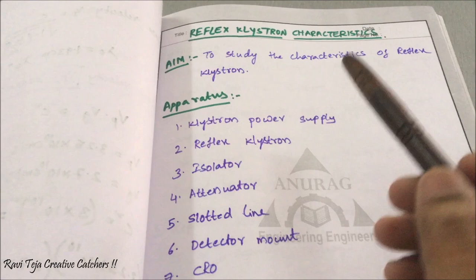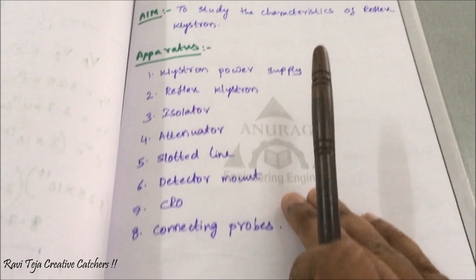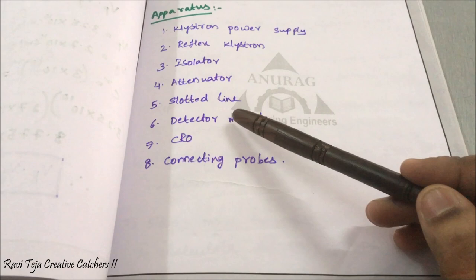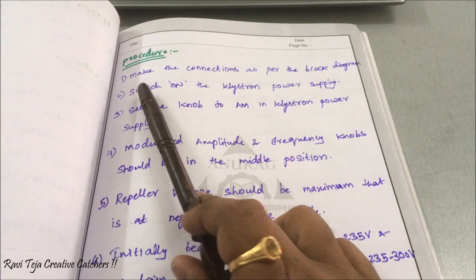Hello everyone, welcome to the course of microwave engineering. In today's lab we are going to learn about reflex klystron characteristics. The aim is to study the characteristics of a reflex klystron. The apparatus we need: klystron power supply, reflex klystron gun, isolator, attenuator, slotted line, detector mount, CRO, and connecting probes.